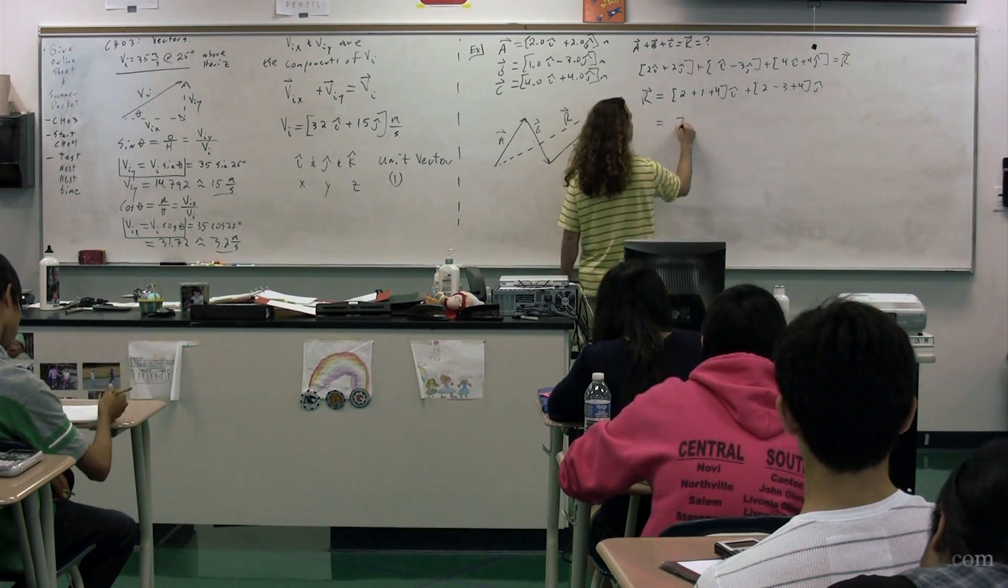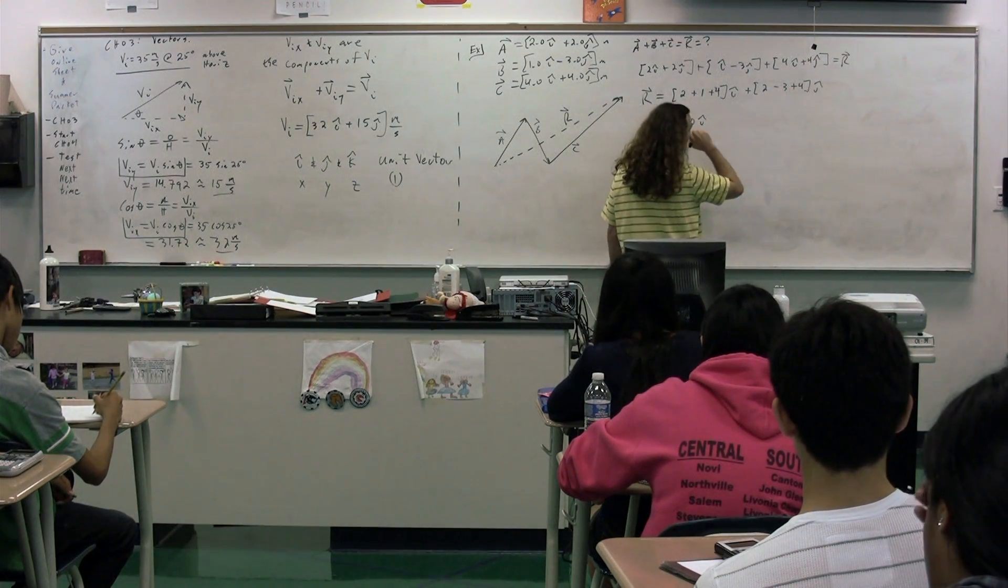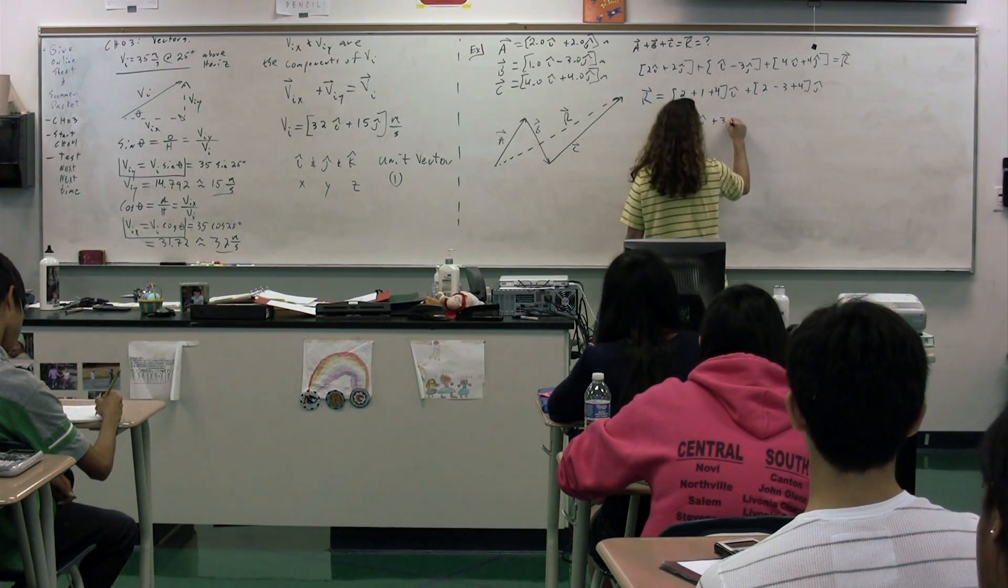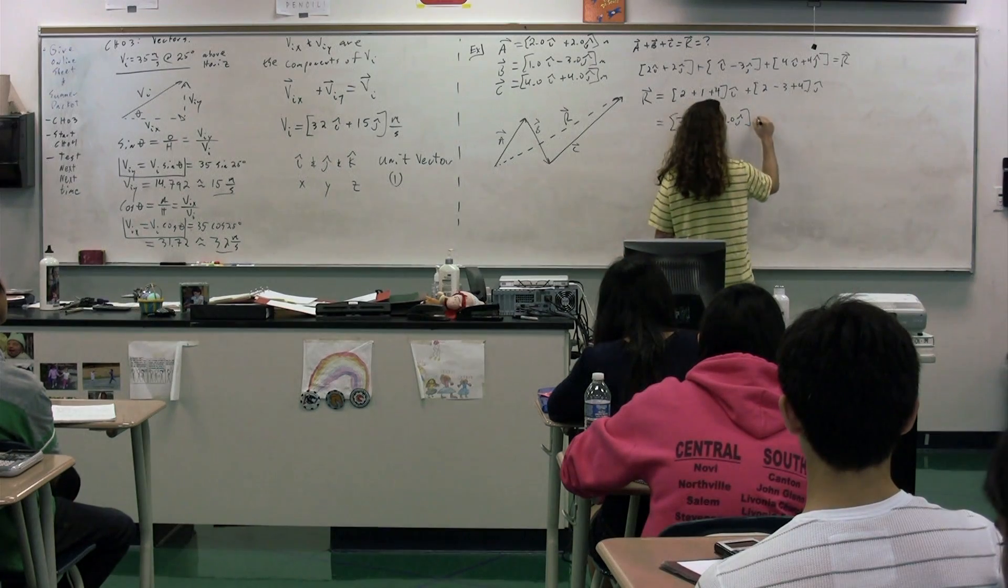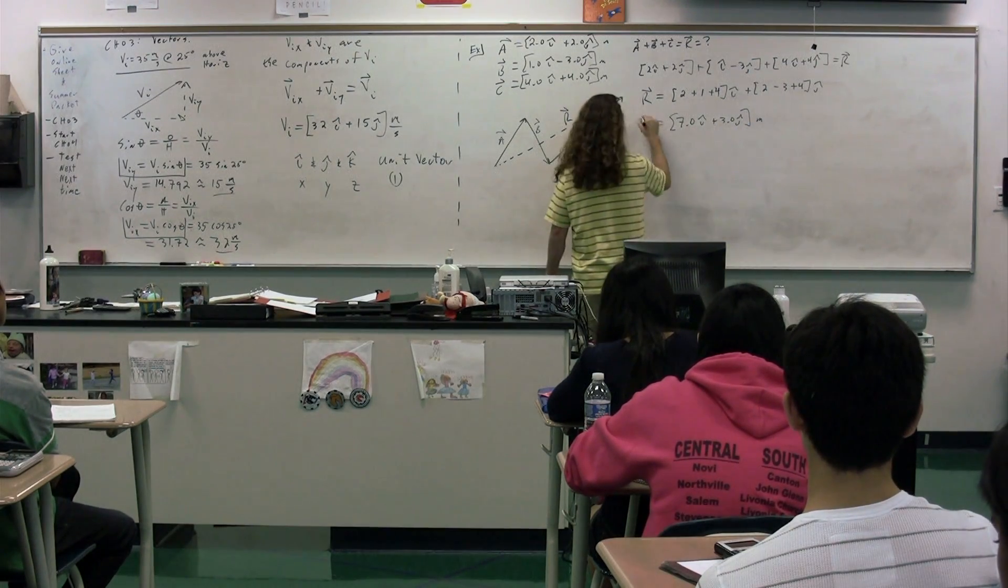So we could see we have 7.0i plus 3.0j, in meters, is our resultant vector, the result of the addition of all of those vectors.